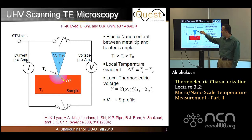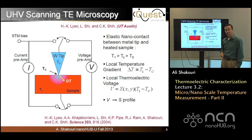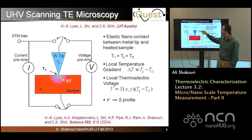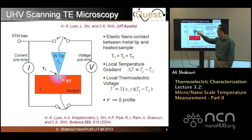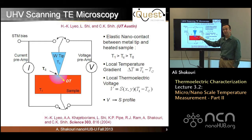As a result, when the tip touches the sample, there is a temperature gradient created near the tip, and that temperature gradient creates a thermoelectric voltage that we want to measure. Of course, you need to monitor the position of the tip using a pre-amplifier. But as soon as you know you are in the right position, you can switch and measure the voltage that is generated due to this temperature difference.